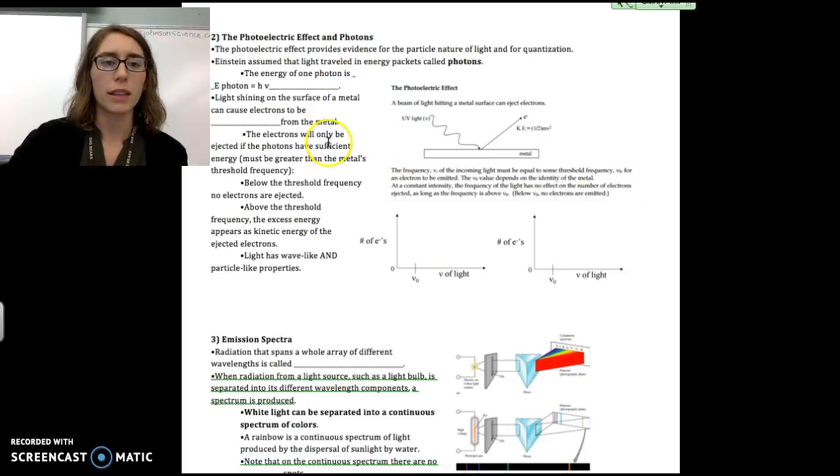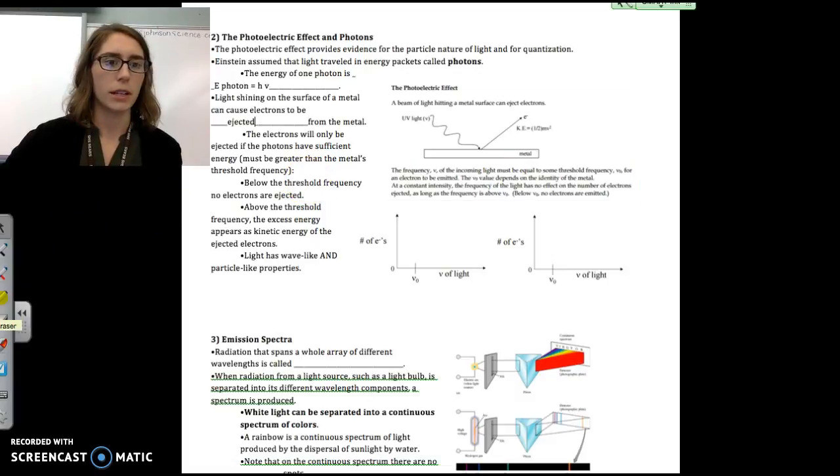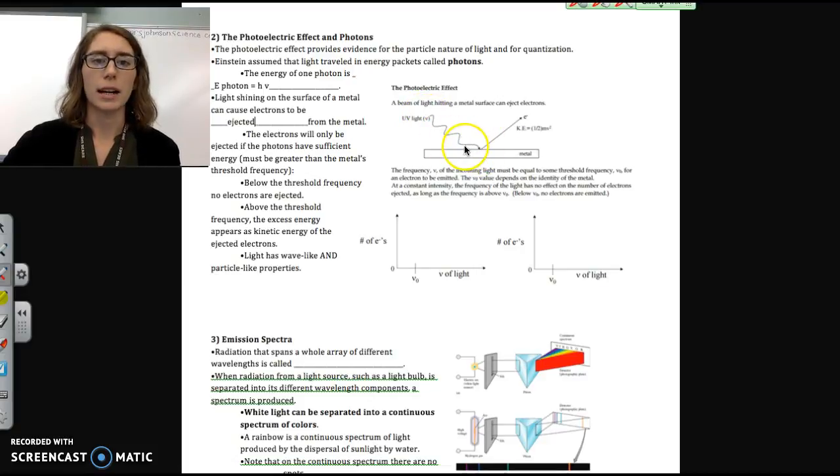And the photoelectric effect that we see, the reason that he came up with this, is because when we shine light on the surface of metal, it can cause electrons to be ejected from the metal. However, this is the really interesting part. The electrons will only be ejected if the incoming light has enough energy. And it must be equal to or greater than this threshold energy that the metal requires. And we call that the work function sometimes. It's abbreviated with the Greek symbol phi.